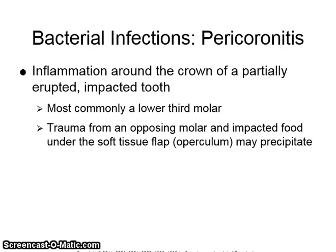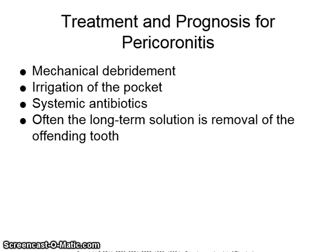Pericoronitis is inflammation around the crown of a partially erupted impacted tooth. It is most commonly seen on lower third molars. Trauma from an opposing molar as well as impacted food under the soft tissue flap, known as the operculum, may precipitate the inflammation. Treatment includes mechanical debridement, irrigation of the pocket, systemic antibiotics, and often the long-term solution is removal of the offending tooth.